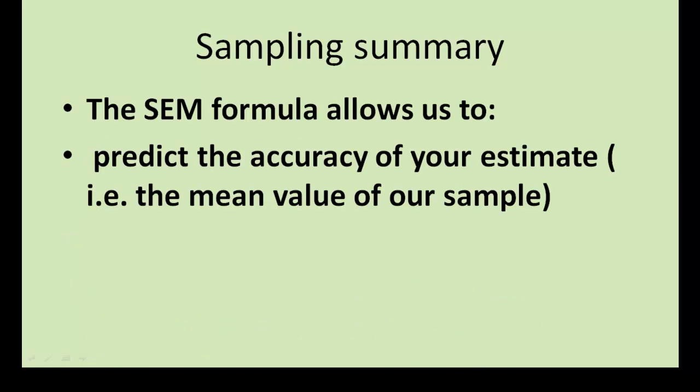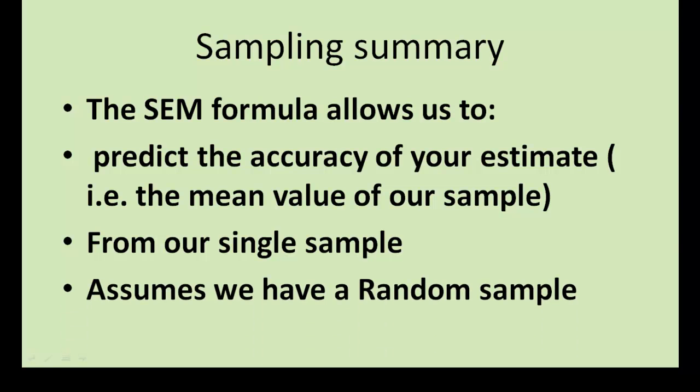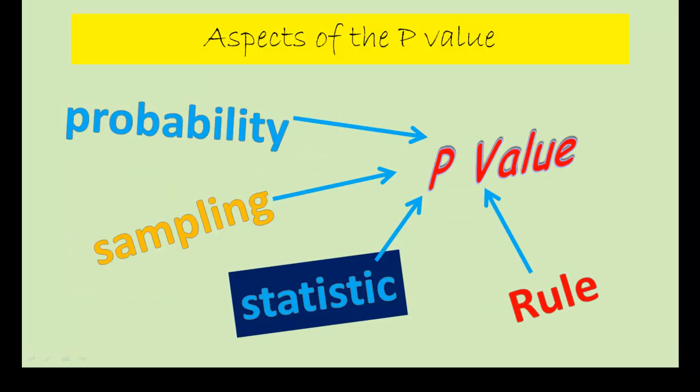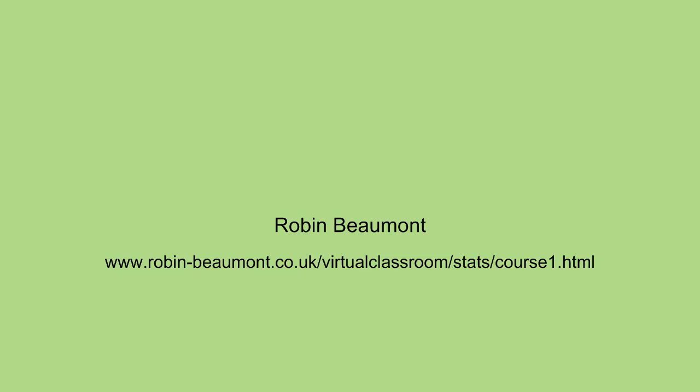So what can we say from our quick review of random sampling of the mean? The SEM formula allows us to predict the accuracy of our estimate, that is the mean value of our sample across multiple samples, which we can do from a single sample. That is amazing. We can take one sample and predict what other samples will look like. But of course this is assuming that we have a random sample, which is the most important thing. The next aspect of the p-value that we're going to talk about is the concept of a statistic and how this relates to our understanding of a p-value. Bye.